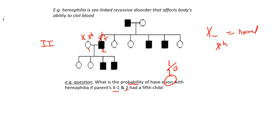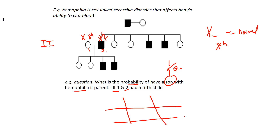Let's put that right into the question so we don't forget the product rule — include the one half for being a son, and one half for hemophilia. Let's do our simple monohybrid cross, using X's and Y's because it is sex-linked recessive.